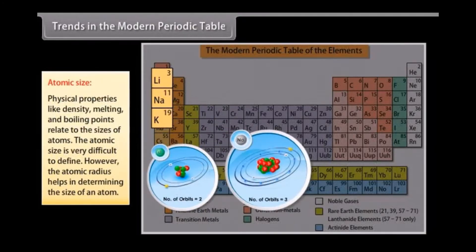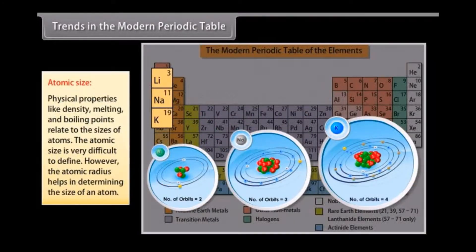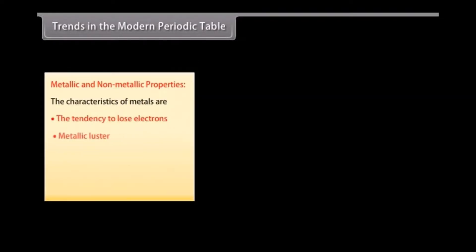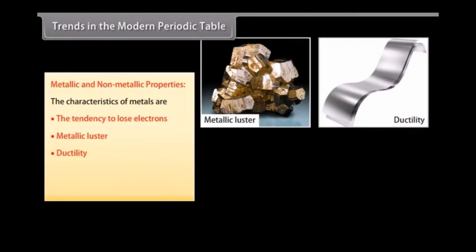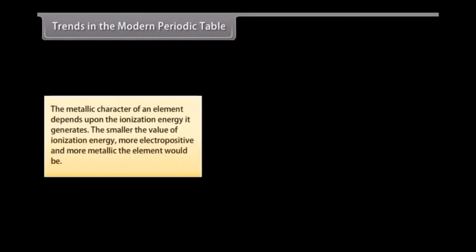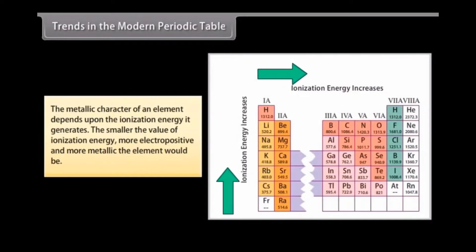Metallic and non-metallic properties. The characteristics of metals are its electro-positive character which means the tendency to lose electrons, metallic luster, ductility, malleability and electrical conductance. The metallic character of an element depends upon the ionization energy it generates. The smaller the value of ionization energy, more electro-positive and more metallic the element would be.